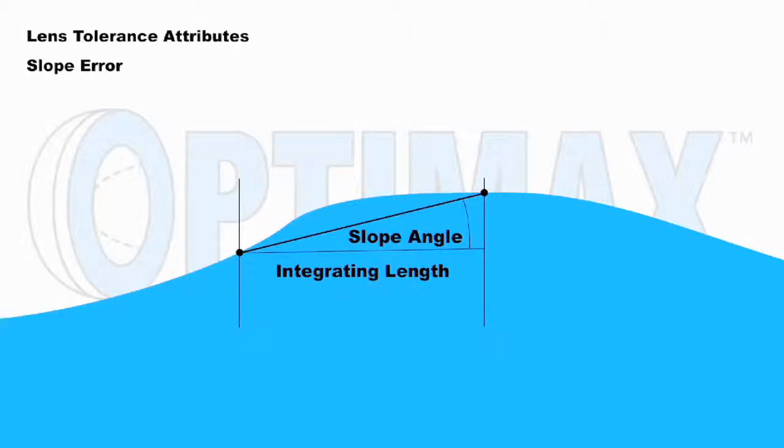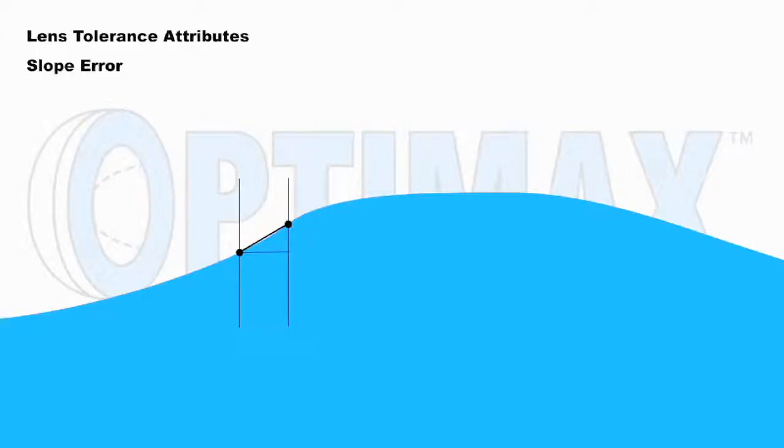Next, we look at the effect the chosen integration length will have on slope angle. Angle typically increases as a function of decreasing integrating length.